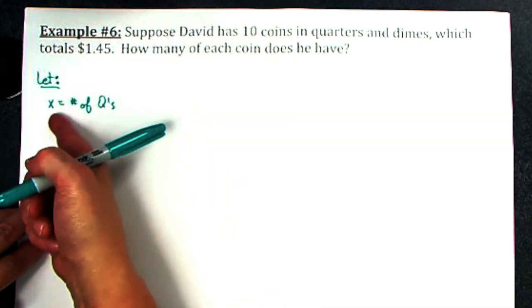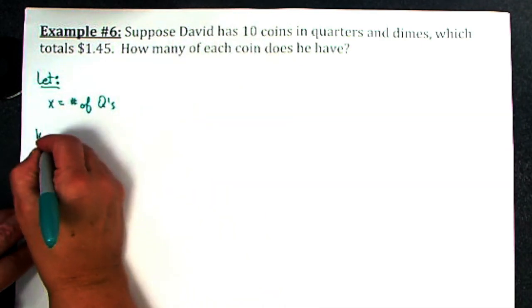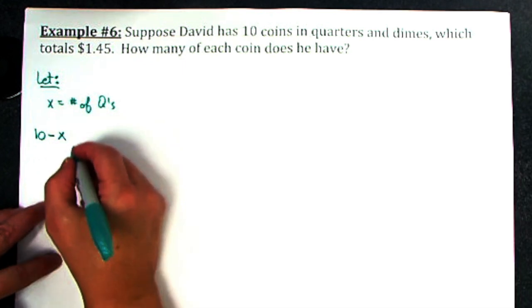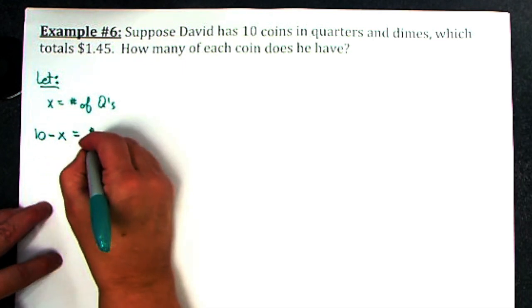Algebraically, since I don't know what x is, we took 10 minus what I said that number was. So 10 minus x, whatever that number happens to be, will be the number of dimes.